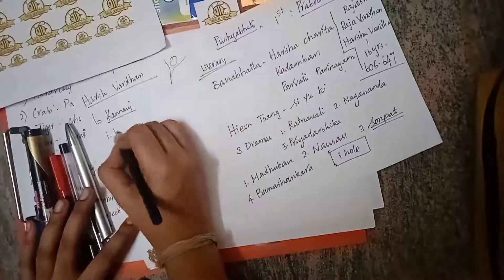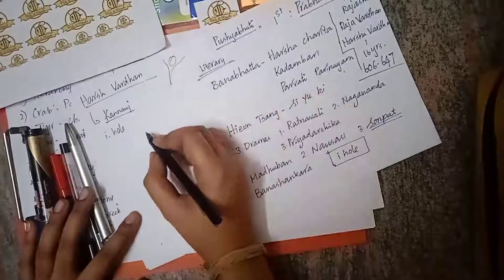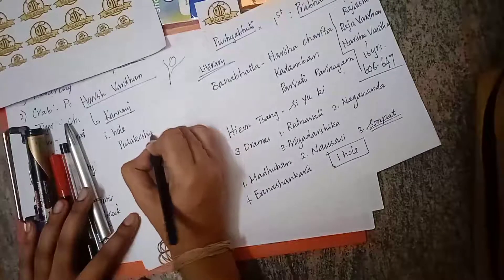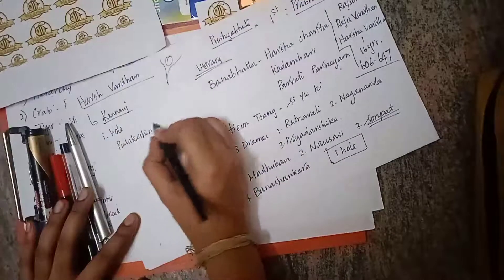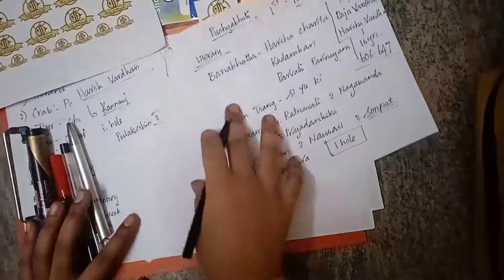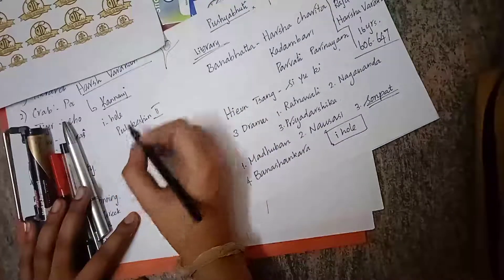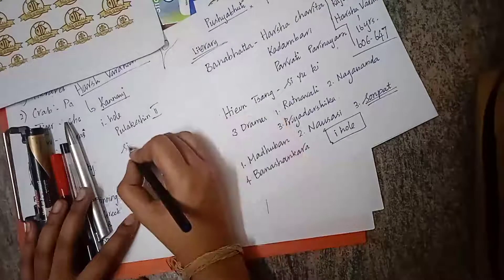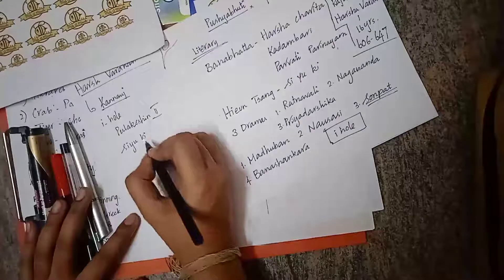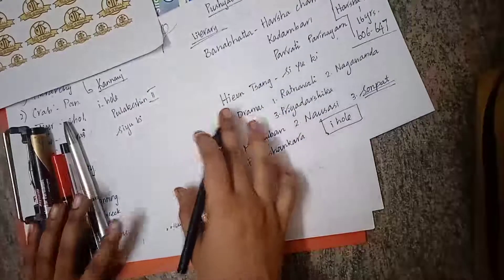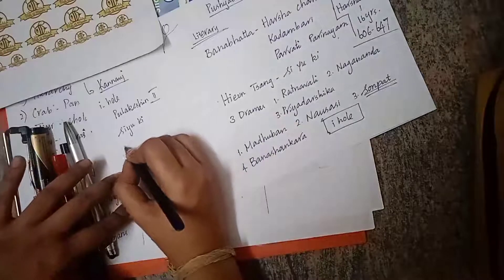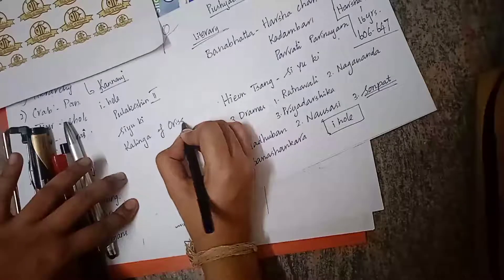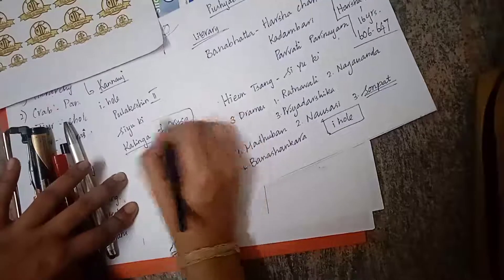The Naipoli inscription tells that Harshavardhan was defeated by Pulakeshin II, and this defeat is also confirmed by Hayun Sang's Sayuki. After defeating Harshavardhan, Pulakeshin II received the title Parameshwaran. Harsha's last military conquest was Kalinga of Orissa.